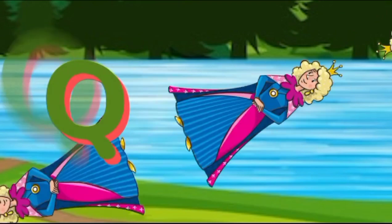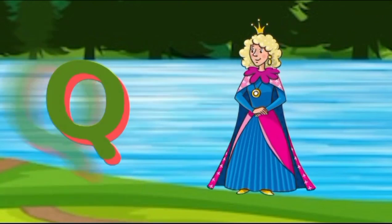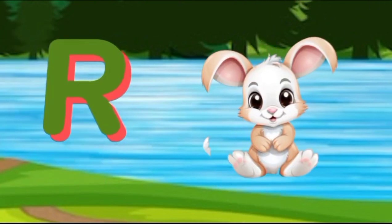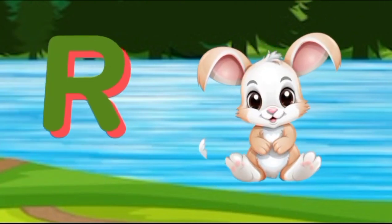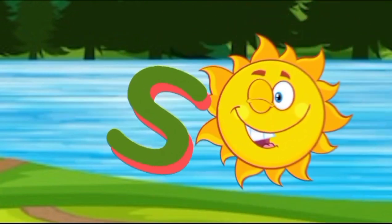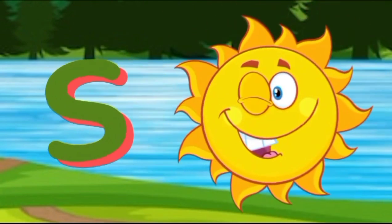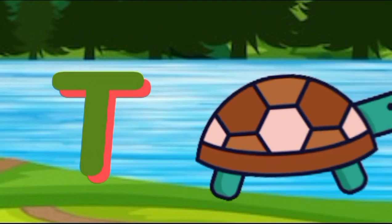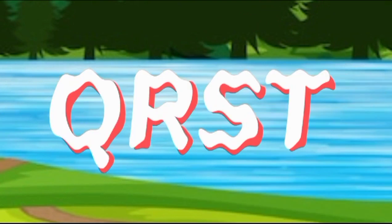Q is for queen, k-k-queen. R is for rabbit, r-r-rabbit. S is for sun, s-s-sun. T is for toad, t-t-toad.